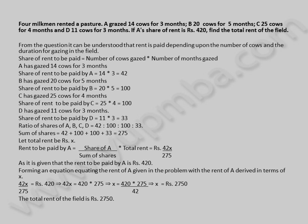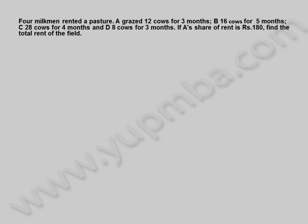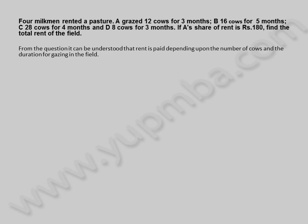Let us see another example. Four milkmen rented a pasture. A grazed 12 cows for three months, B 16 cows for five months, C 28 cows for four months, and D 8 cows for three months. If A's share of rent is 180 rupees, find the total rent of the field. From the question, it can be understood that rent is paid depending upon the number of cows and the duration for grazing in the field. Share of rent to be paid equals number of cows grazed multiplied by number of months grazed.